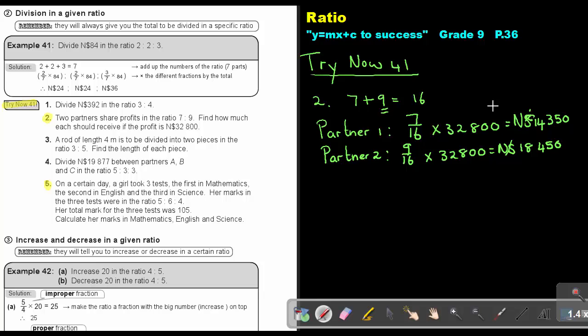Let's do number 5. On a certain day, a girl took three tests. The first is mathematics, the second is English, and the third is science. Her marks in the three tests were in the ratio 5 to 6 to 4. Her total mark for the three tests was 105. Calculate her marks in mathematics, English, and science.